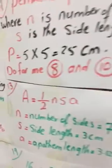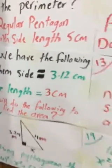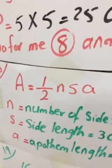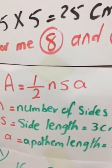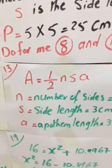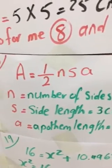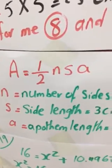So now, what do you think we have to do? We have to find the area. So area is 1 over 2 n s a. Let's identify what is n, what is s, what is a. n is the number of sides, s is the side length, and a is the apothem length.